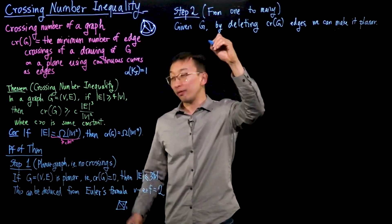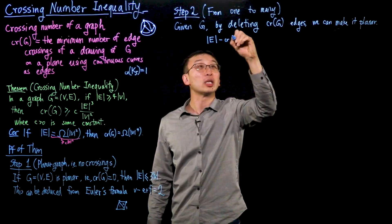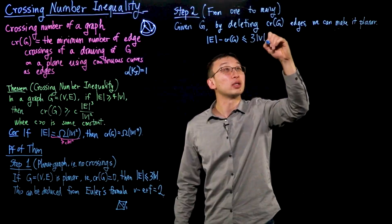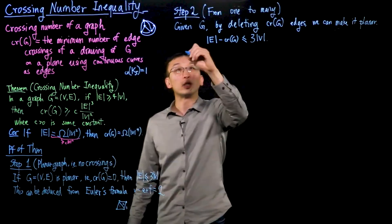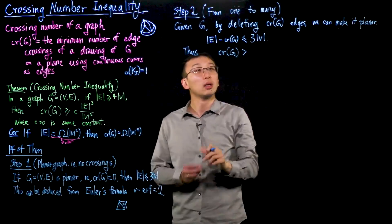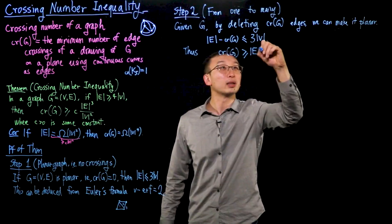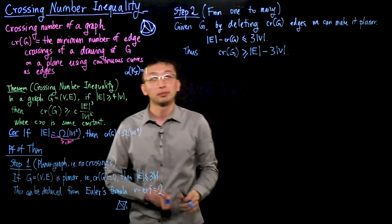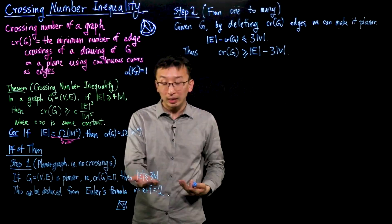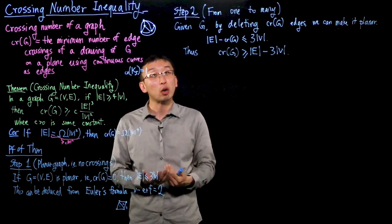In this planar graph, the inequality from step one must be satisfied. So the number of edges of G minus the crossing number of G must be at most three times the number of vertices. Rearranging this, we obtain a lower bound on the crossing number: it is at least |E| minus 3|V|. The idea is that if E ≤ 3V is not satisfied, we get at least one crossing, and by repeatedly deleting crossings we go from one crossing to many crossings.